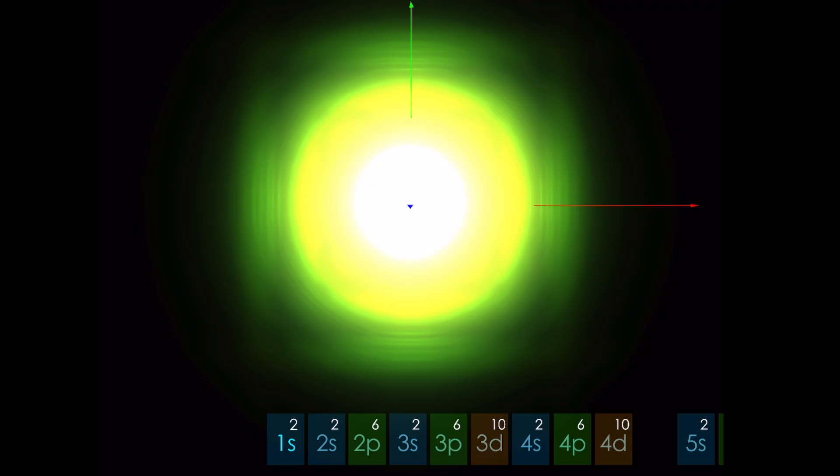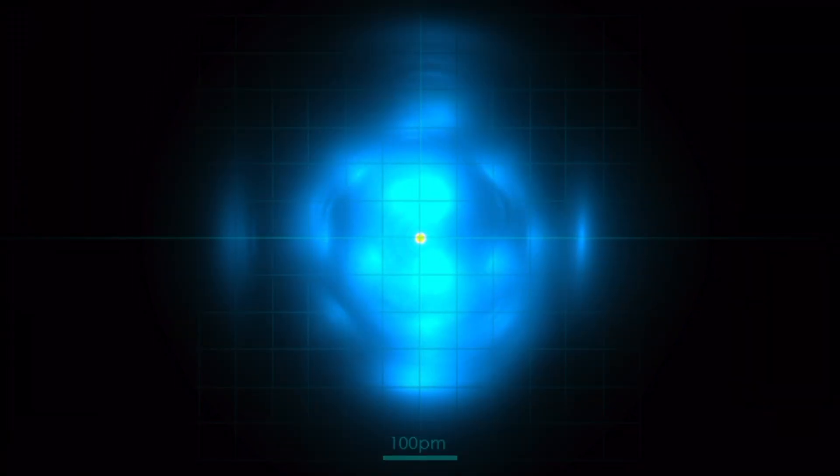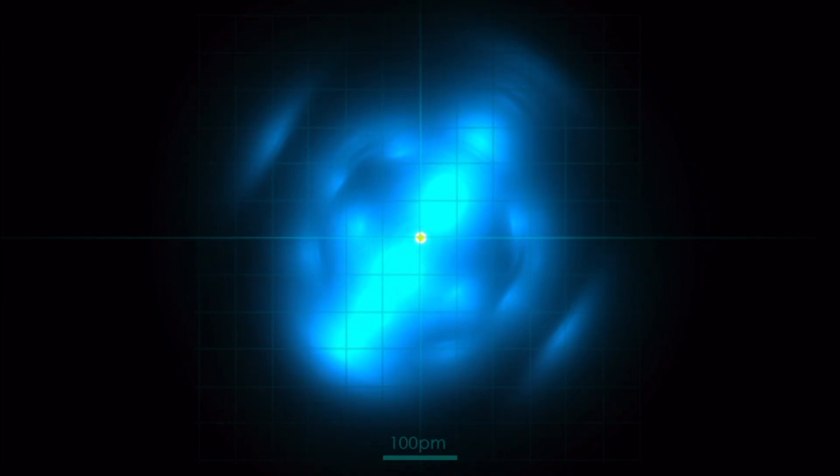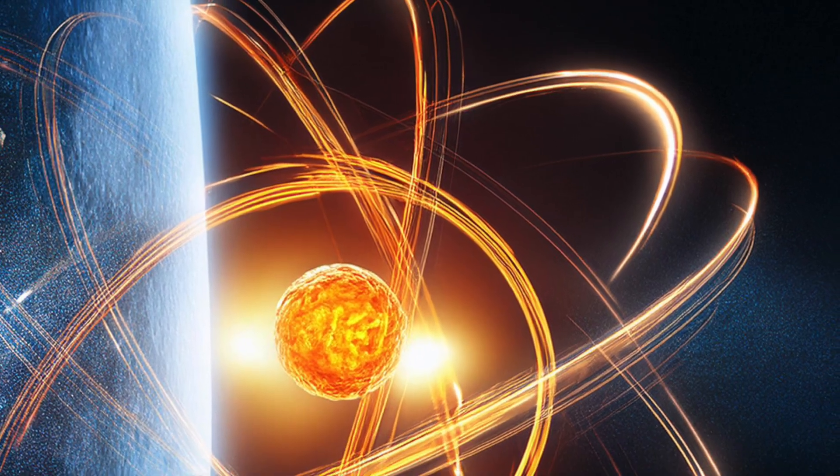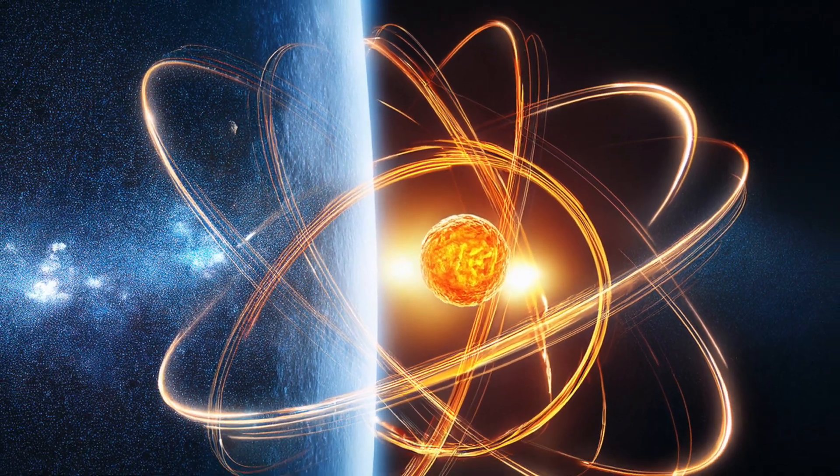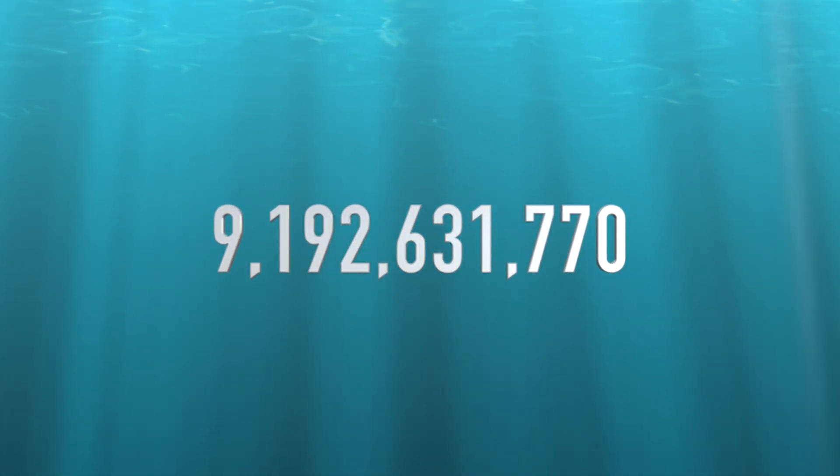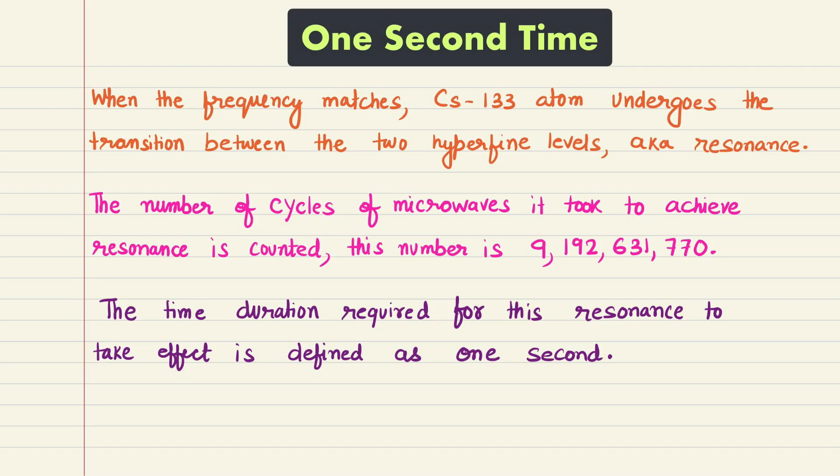When the frequency matches, the Cs-133 atom undergoes the transition between the two hyperfine levels. This process is also called resonance. The number of cycles of microwaves it took to achieve resonance is counted, and this number is 9,192,631,770. The time duration is defined as one second.